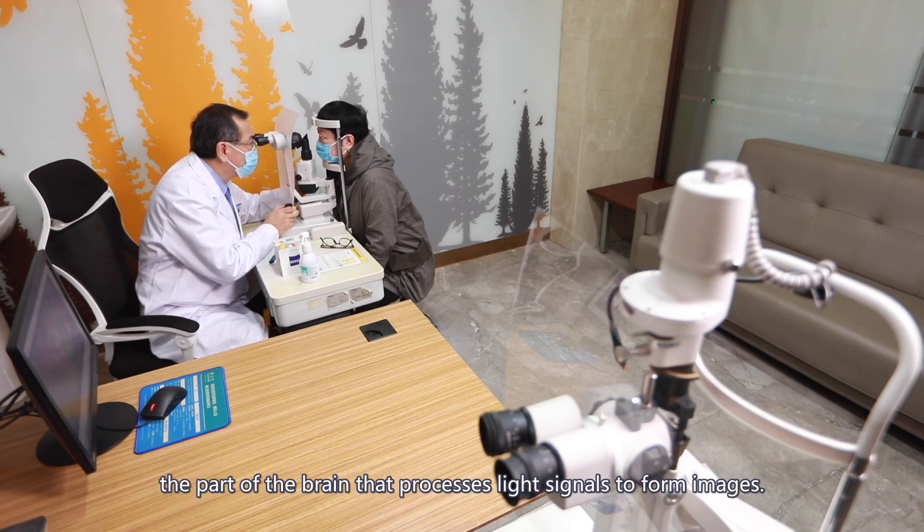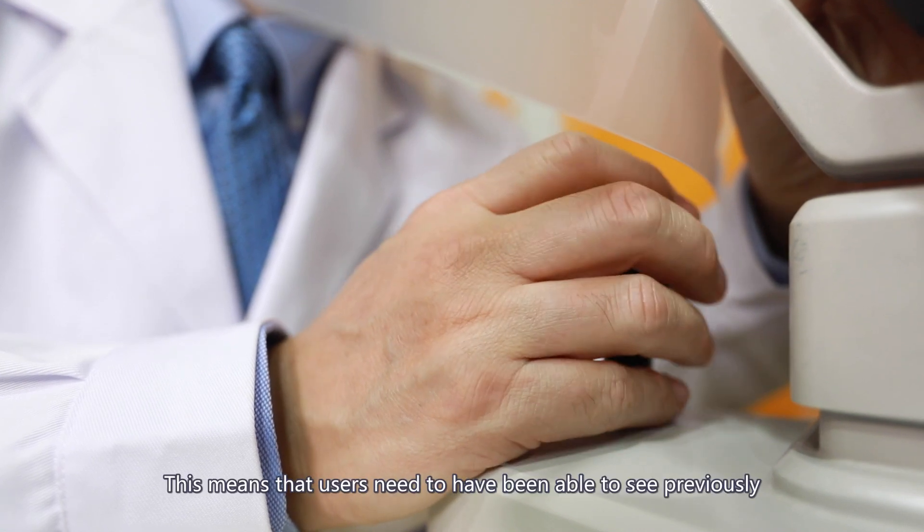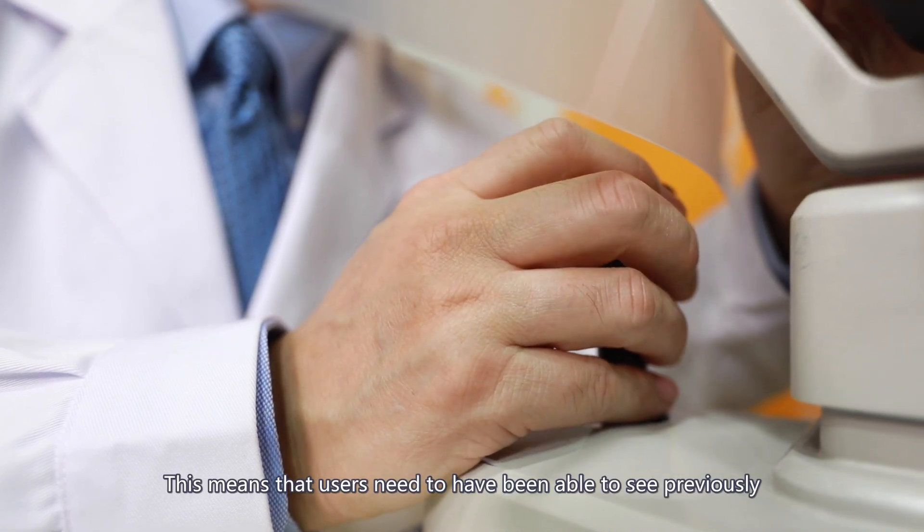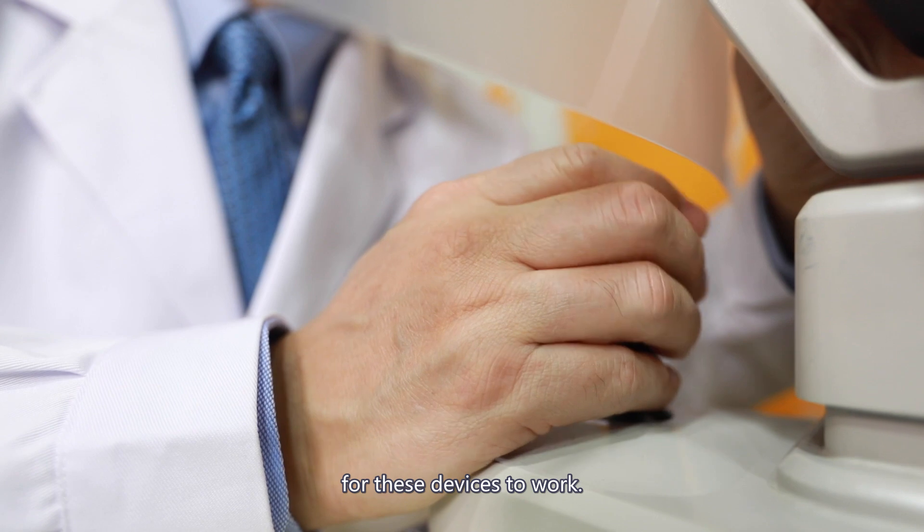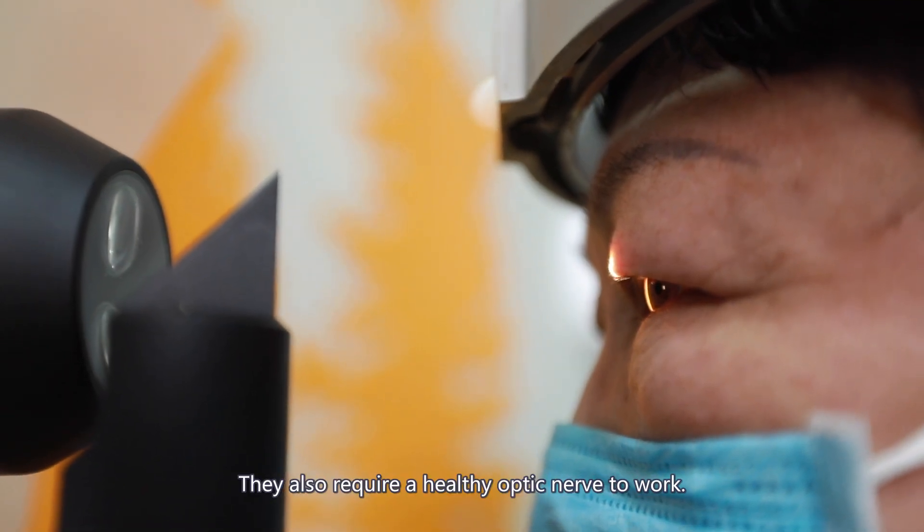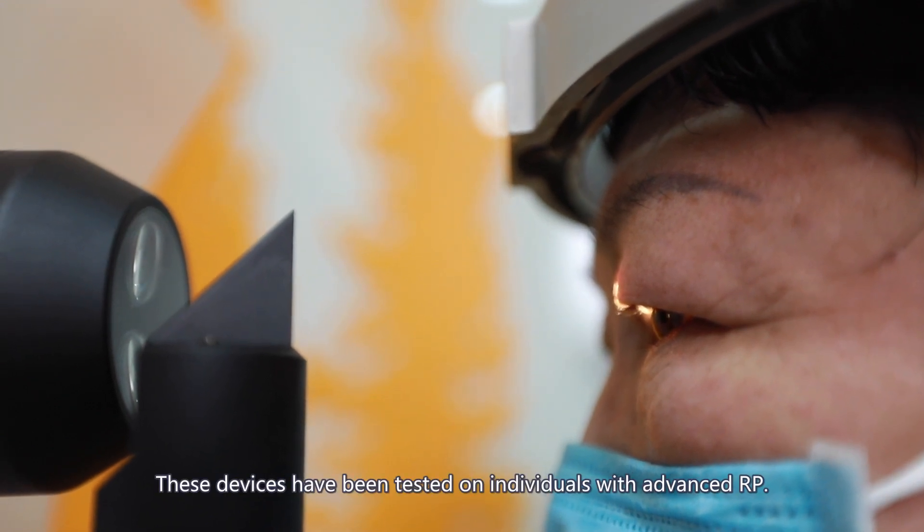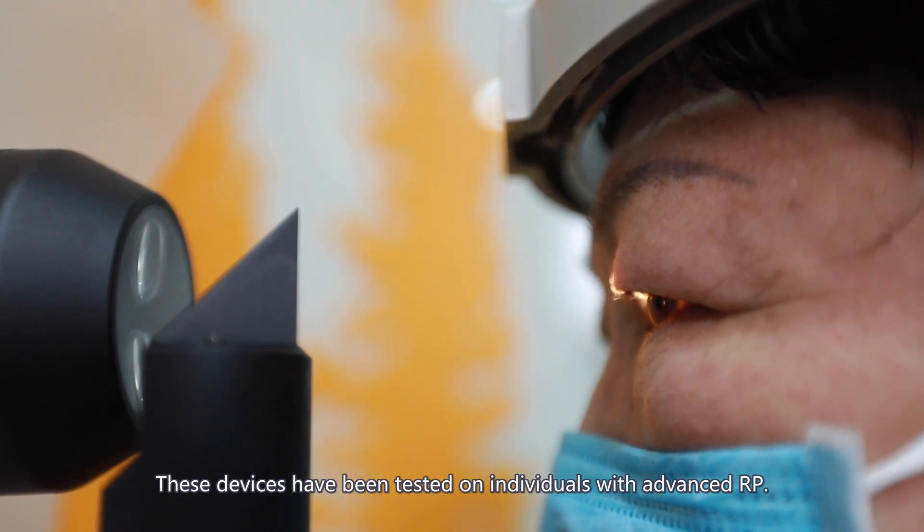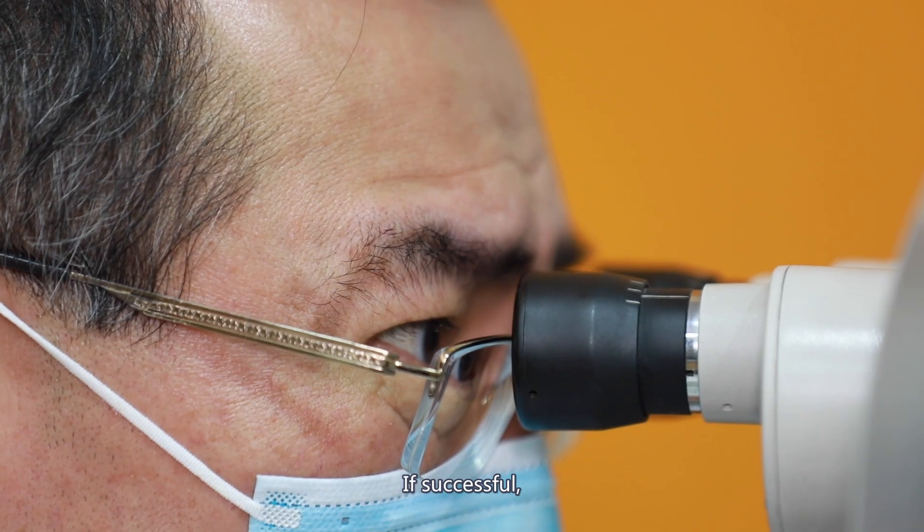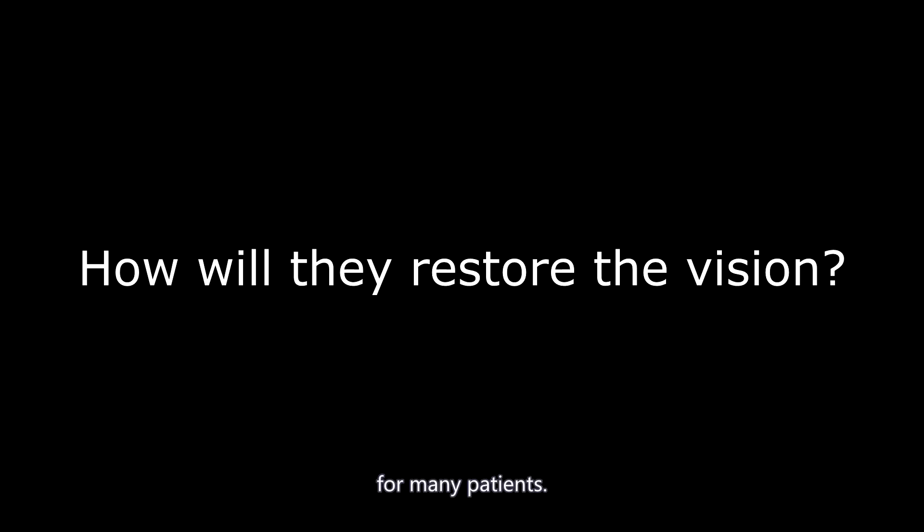The visual cortex is the part of the brain that processes light signals to form images. This means that users need to have been able to see previously for these devices to work. They also require a healthy optic nerve. These devices have been tested on individuals with advanced RP. If successful, the devices may be a treatment option for many patients.